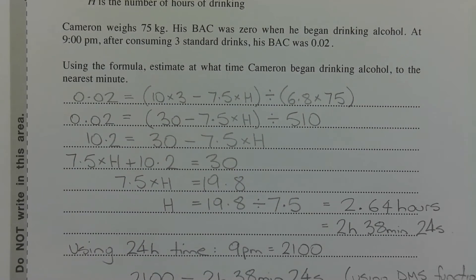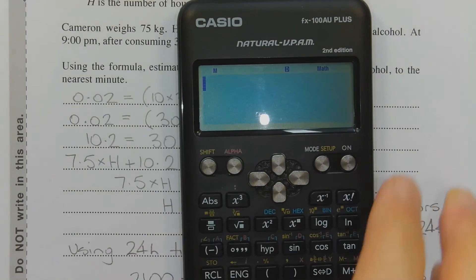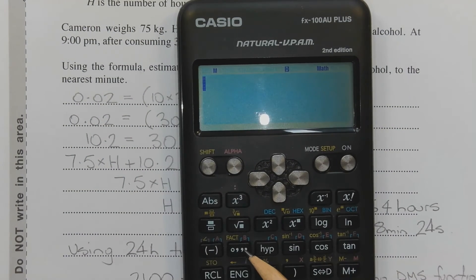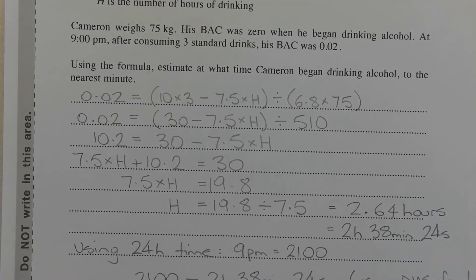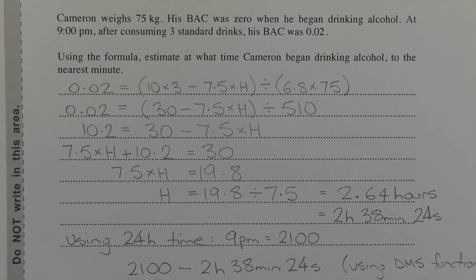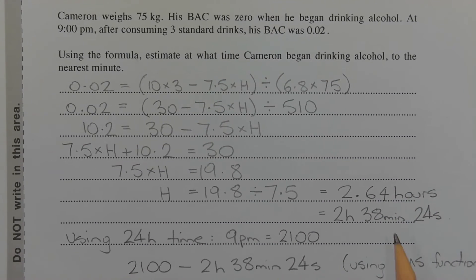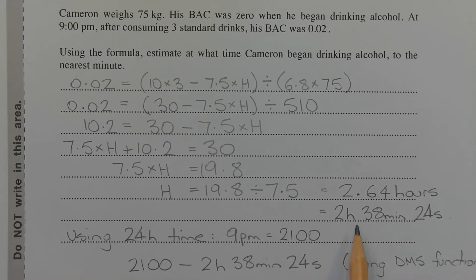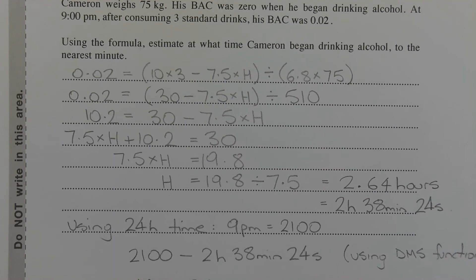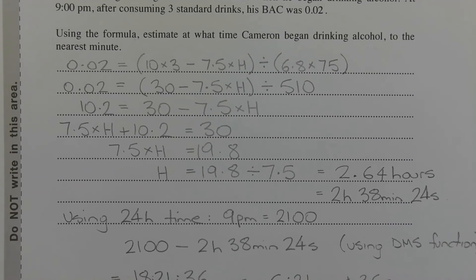Using the degrees-minutes-seconds button on the calculator — this button here, or wherever you find that function on your model of calculator — 2.64 hours is equivalent to 2 hours, 38 minutes, and 24 seconds.